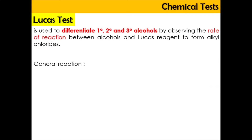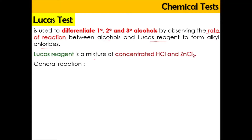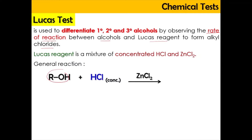So first, the Lucas test. The Lucas test is used to differentiate between primary, secondary, and tertiary alcohol by observing the rate of reaction between the alcohol and the Lucas reagent in order to form alkyl chloride. The Lucas reagent includes a mixture of concentrated HCl as well as zinc chloride. In the general reaction, alcohol reacts with HCl with zinc chloride as catalyst, and OH is substituted with chlorine, producing RCl and water as by-product.